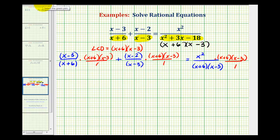And now we'll simplify. Notice here we have a factor of x plus six over x plus six, which simplifies to one. Here we have a factor of x minus three over x minus three. And here we have a factor of x plus six over x plus six, and x minus three over x minus three.